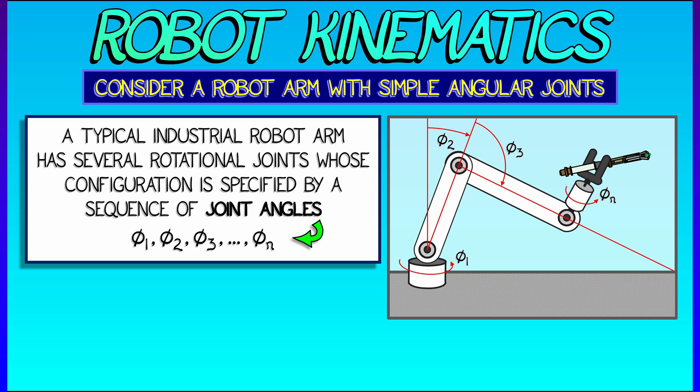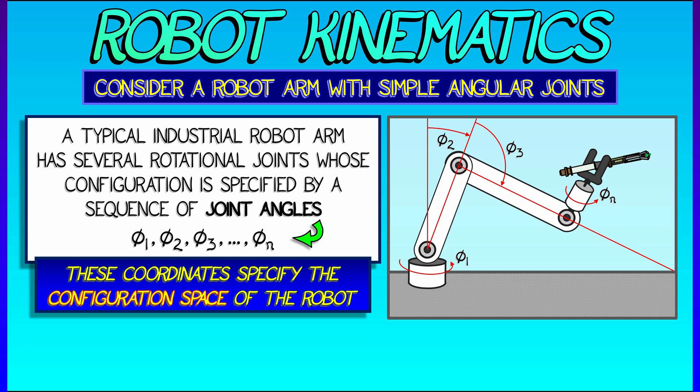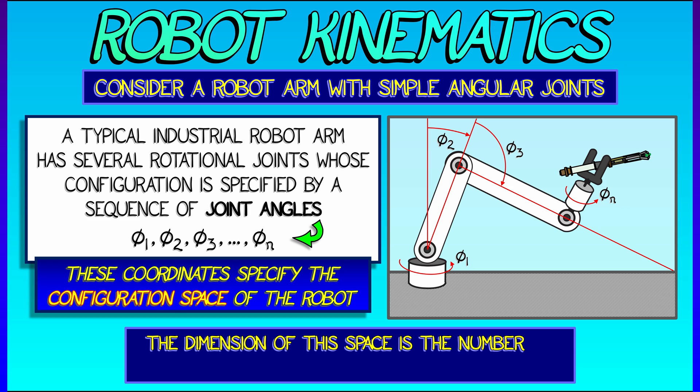But here's the thing. There are many different ways you can position that robot arm. And together, these n angles form an n-dimensional configuration space associated to the robot arm. So this configuration space is not necessarily three-dimensional. The dimension of it is n, the number of variables you need in order to specify any particular configuration of the arm.